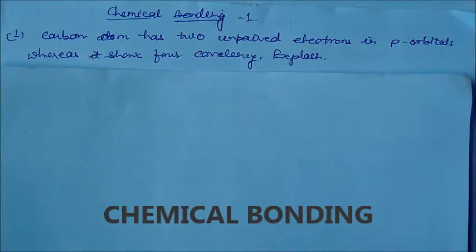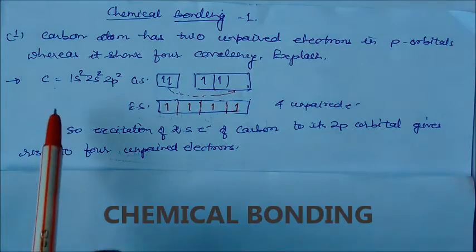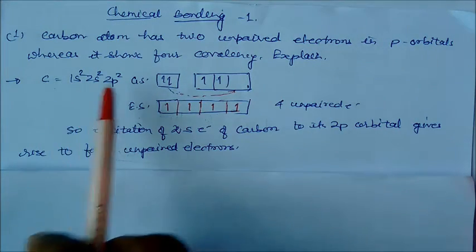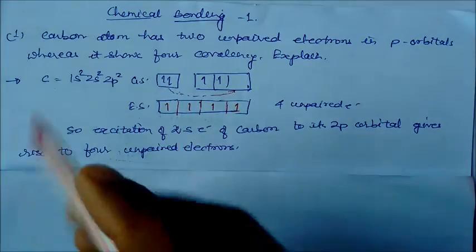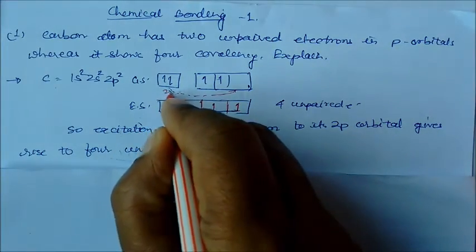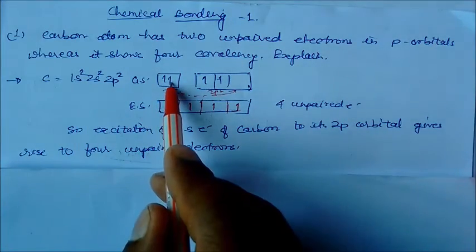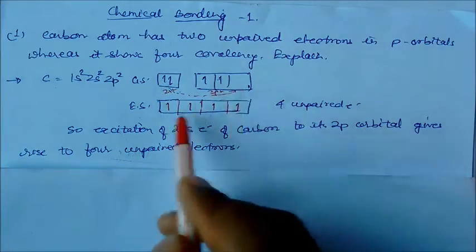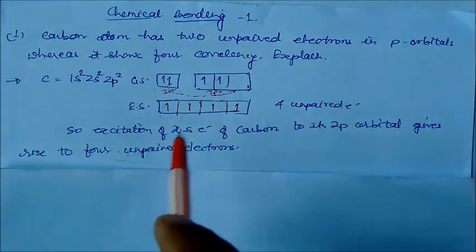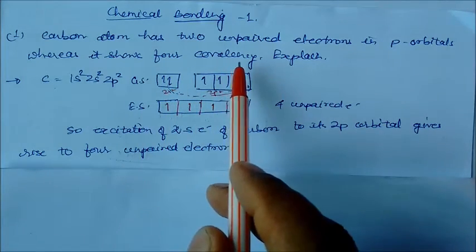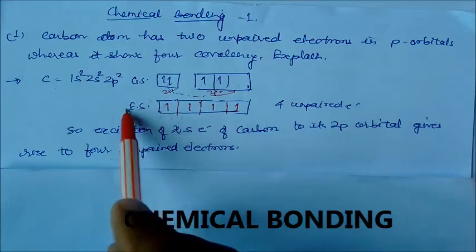The answer is quite easy. If you see the electronic configuration of carbon, this is 1s2 2s2 2p2. You can write in terms of orbitals: this is 2s2 and this is 2p2. What happens when the electron is in excited state? One electron will transfer from the s to p like this, so this becomes four unpaired. That's why carbon shows four covalency, though in ground state they have two unpaired, but in excited state it has four unpaired electrons.